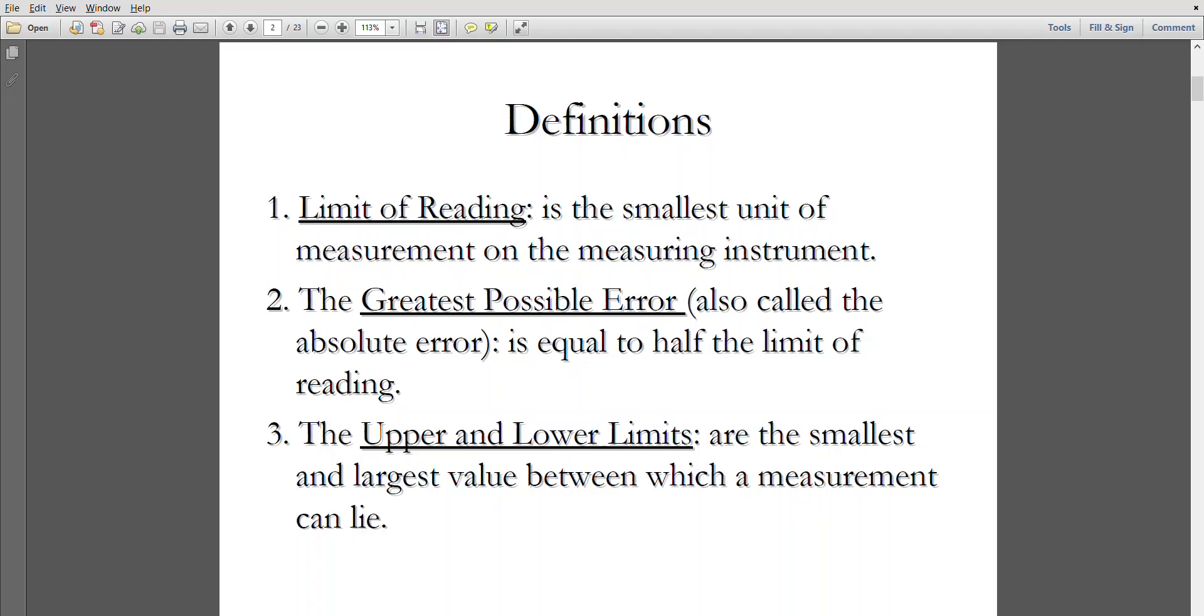Definitions. What is limit of reading? It is the smallest unit of measurement on the measuring instrument or scale. The greatest possible error, also called absolute error, is equal to half the limit of reading. The upper and lower limits are the smallest and largest values available in the measurement scale.